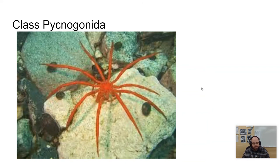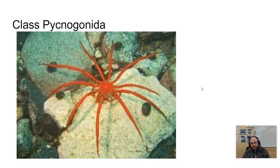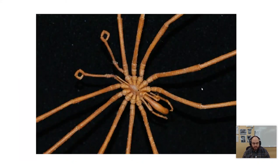The next class is Pycnogonida — sea spiders. There are about a thousand species and they can be up to one meter in diameter. They have small, thin bodies, and some possess five or six pairs of walking appendages instead of four. Their mouth is a proboscis — a long tube used to gather fluids, usually from cnidarians and other soft-bodied organisms. They have a very small head and two pairs of eyes. Sea spiders occur in all oceans but are most abundant in the coldest polar oceans.